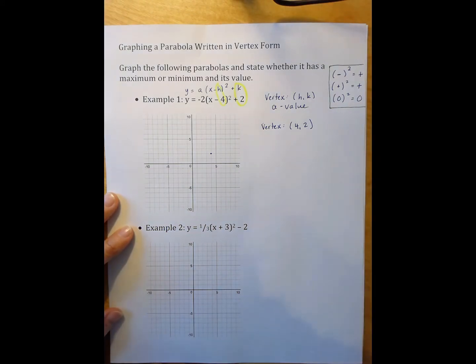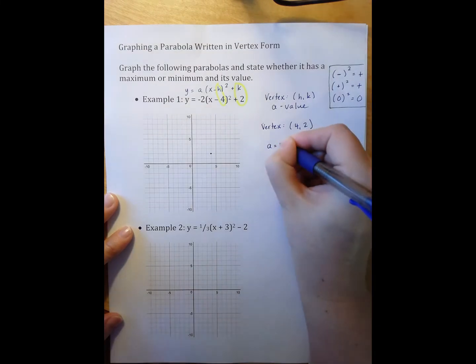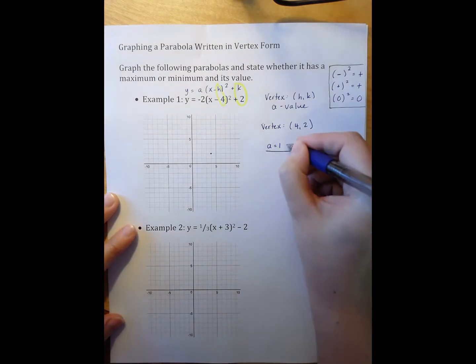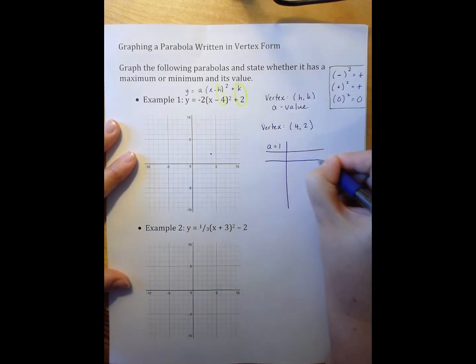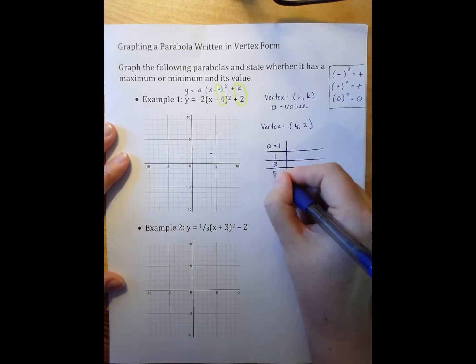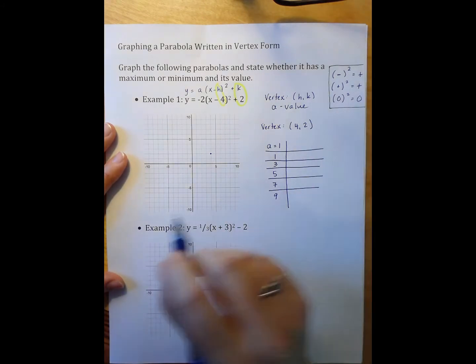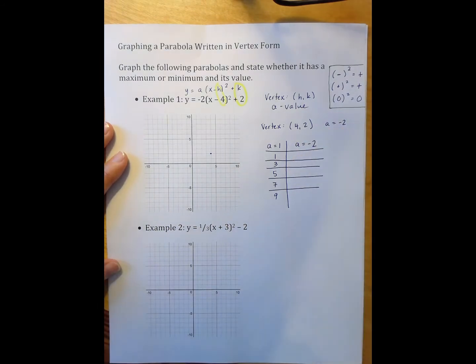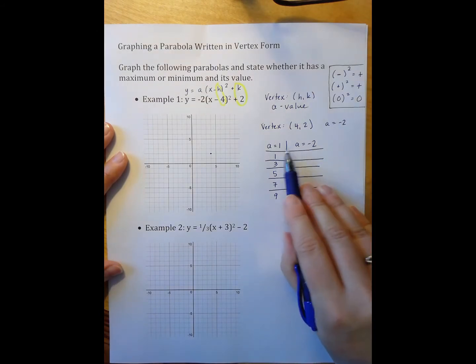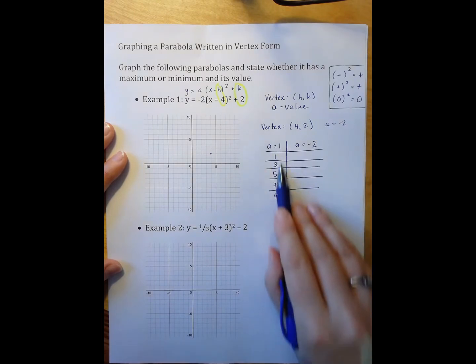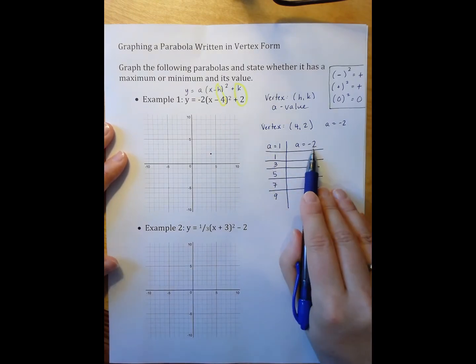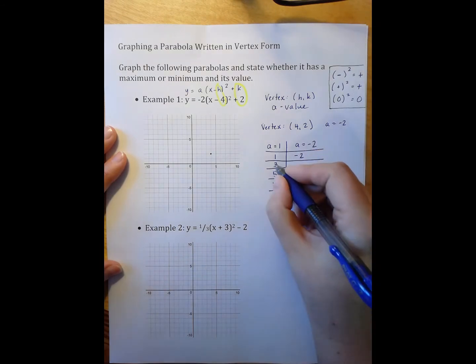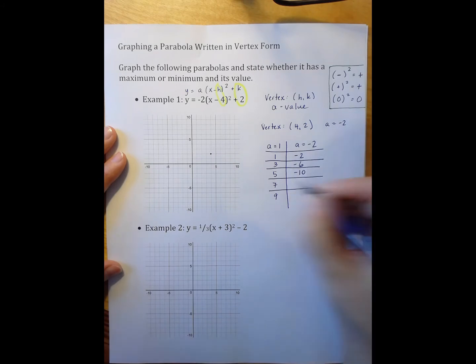Now, once I have my vertex, I need my a value. Remember that initially we talked about the parent function a equals 1, with values 1, 3, 5, 7, 9, etc. But in this case, our a value is negative 2. When a is any other number besides 1, I get the pattern by multiplying the parent function pattern by whatever a is. So 1 times negative 2, 3 times negative 2, 5 times negative 2, 7 times negative 2, 9 times negative 2, etc.